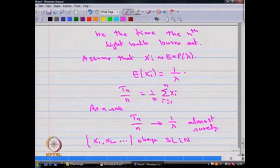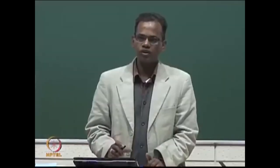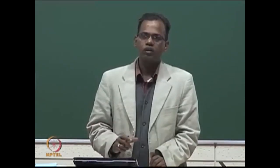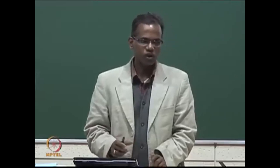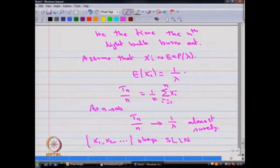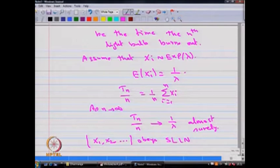There are many more problems of a similar kind, but we are discussing only a few. One can use similar logic: find the moment generating function, conclude the distribution, and find the limiting distribution. Alternatively, verify whether the sequence of random variables converges in mean, in probability, in distribution, in rth mean, or almost surely.